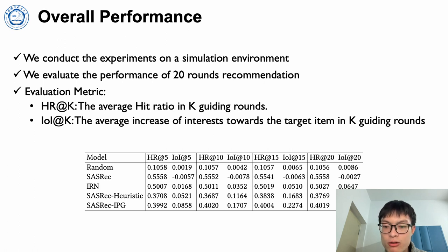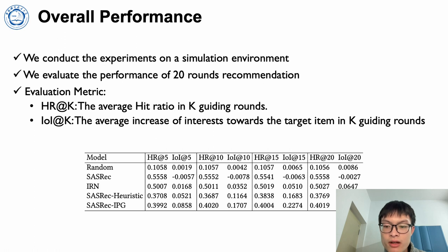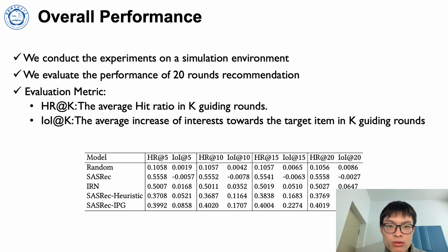Our experiment shows that SOSREC-IPG outperforms all baseline models in terms of the guiding metric IOI at K, while the decline in HR is acceptable.